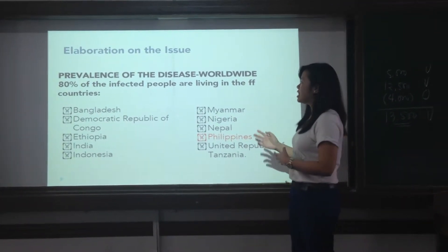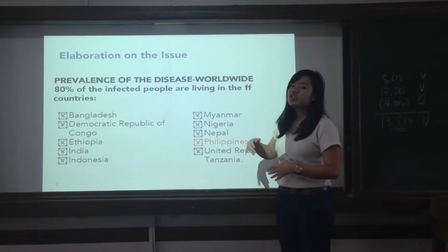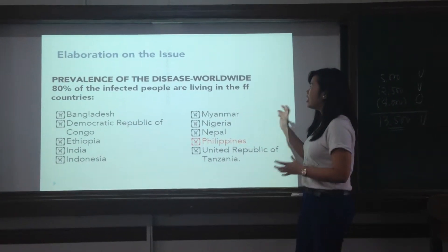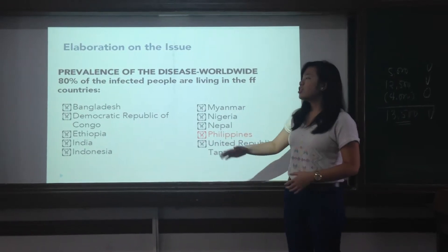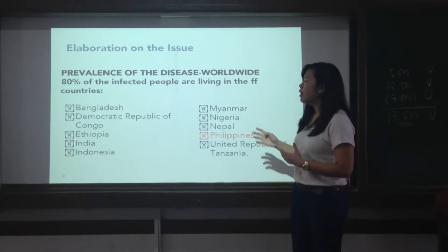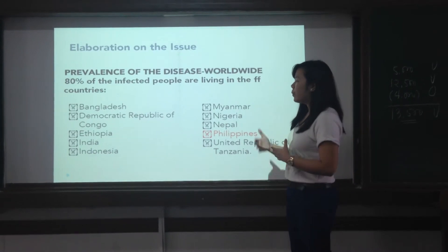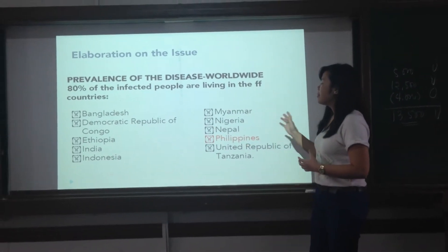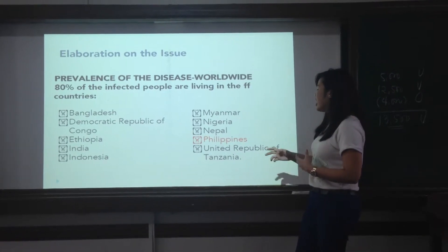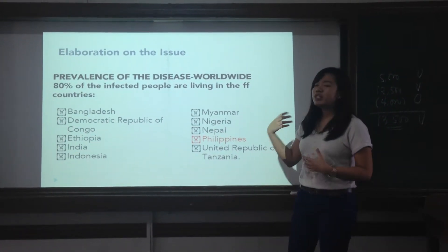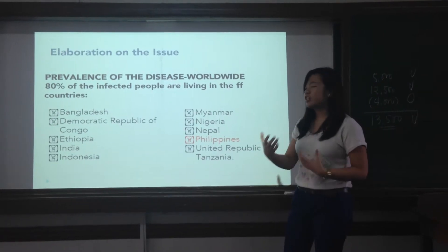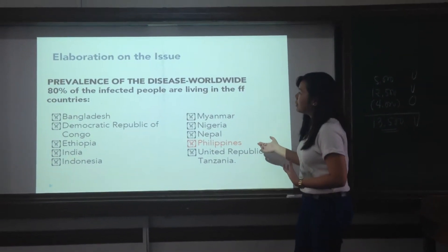80% of infected people are living in the following countries: Bangladesh, Democratic Republic of Congo, Ethiopia, India, Indonesia, Myanmar, Nigeria, Nepal, Philippines, and United Republic of Tanzania. Most of these countries are tropical countries, and one of them is the Philippines.